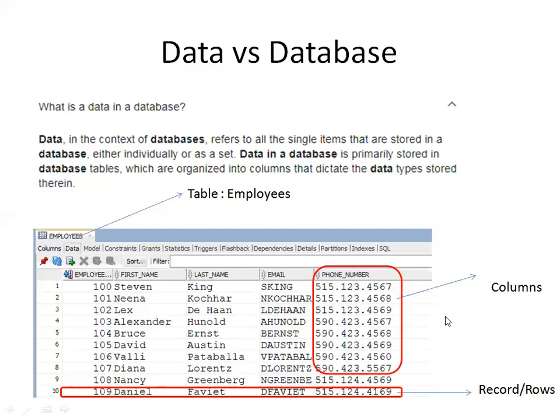A table always contains a set of records and a set of columns. Each record will have values for a set of columns. In a database, the table is the only storage component — the only object in the database capable enough to store the data.